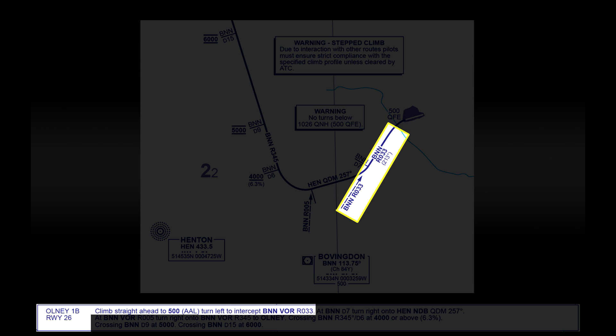First, let's confirm that this is for departing runway 26. Once we take off, the first thing to do is climb up to 500 feet. Next would be to pick up the 033 degree radial from Bovington. Alternatively, you can set your VOR to 213 so that you're flying to the VOR station. Then once we're seven miles from the station, you would need to turn right and fly a course of 257 degrees to the Hinton NDB station.